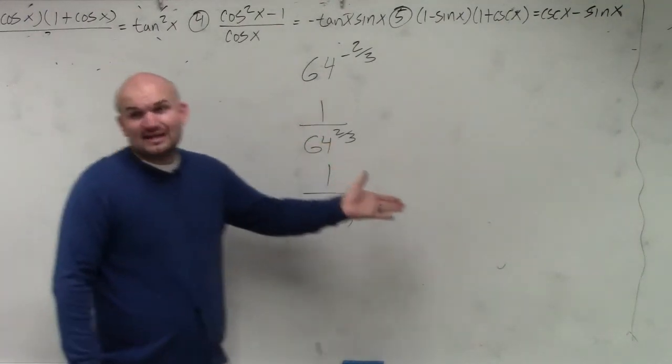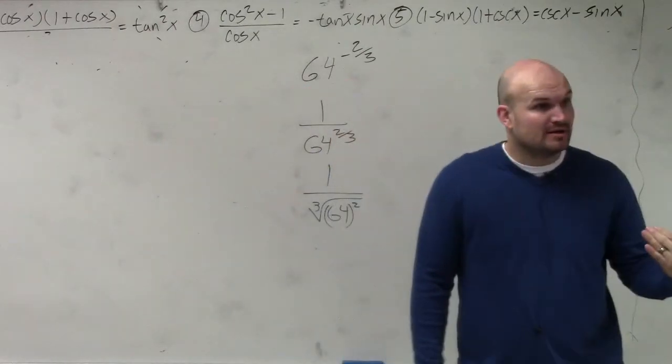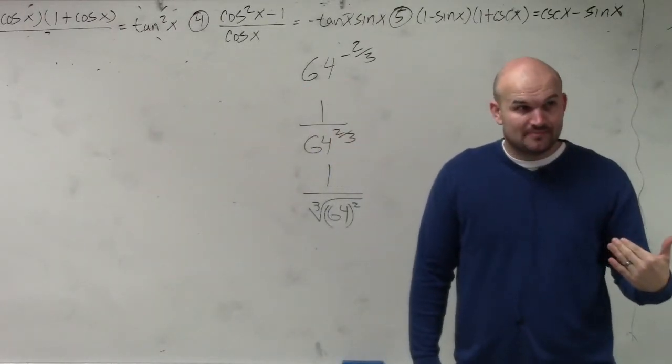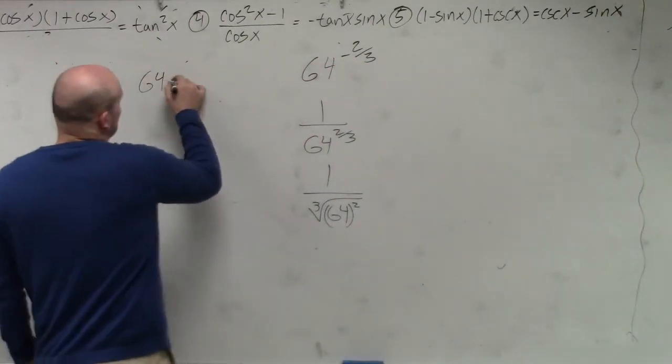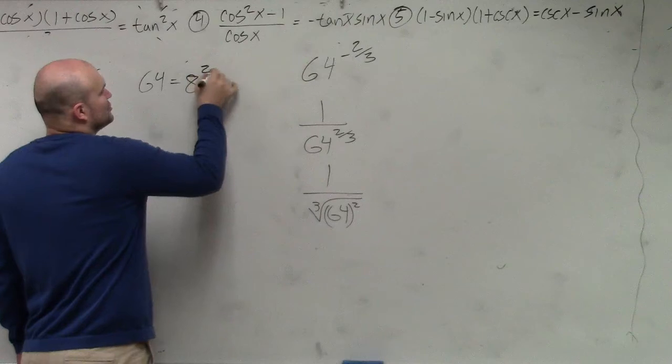We look at 64. And I recognize, I know, hey, 64 is a square number, right? 64 is a square number. That's perfect. So I can represent 64 as 8 squared.